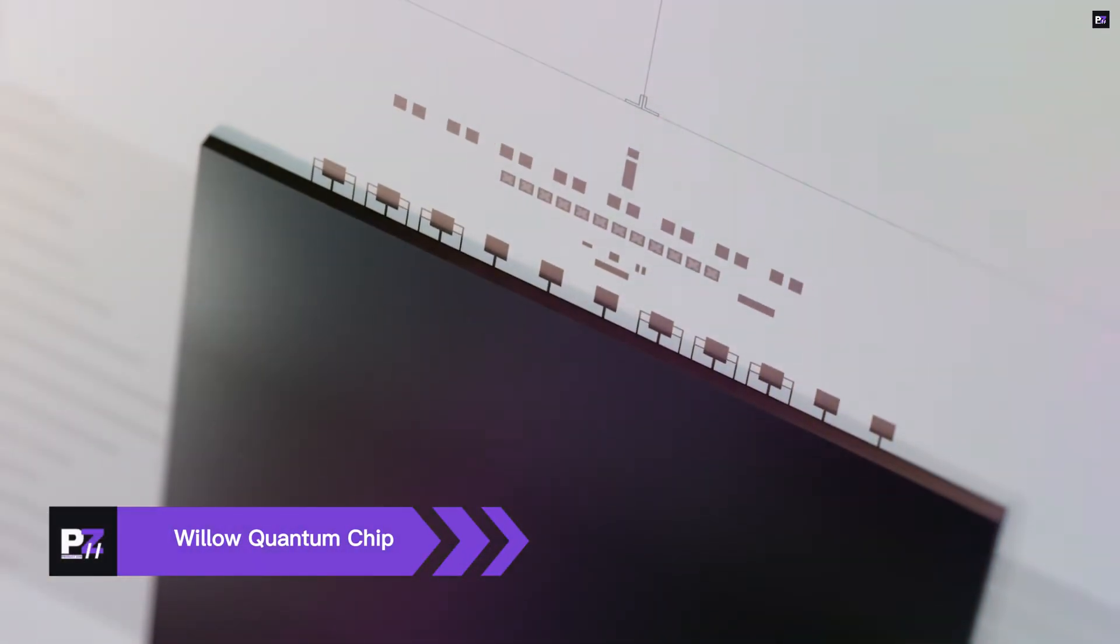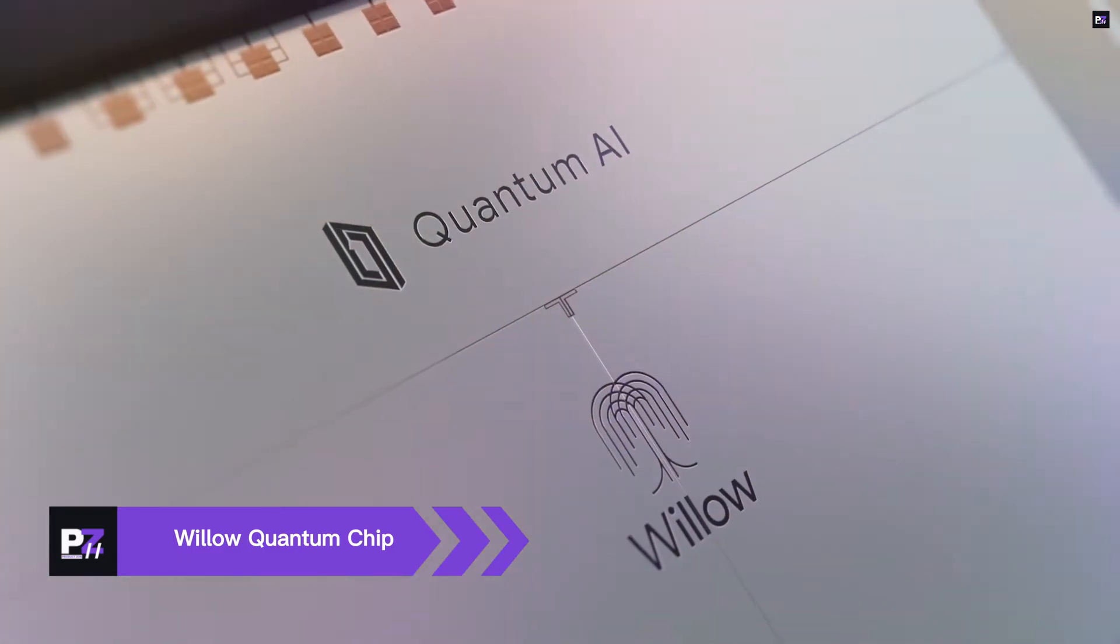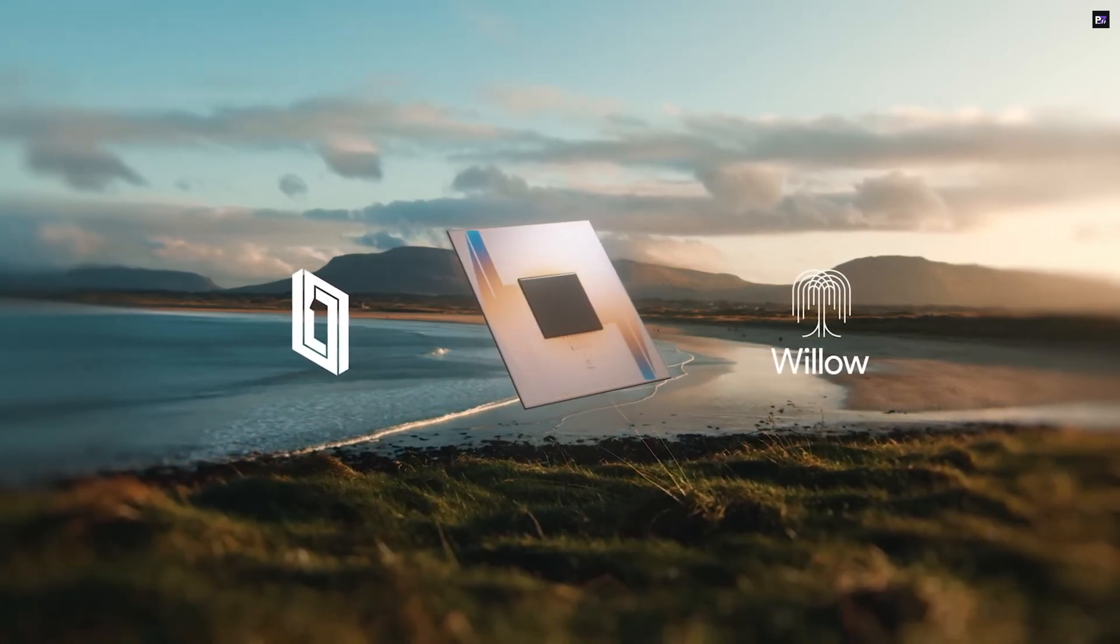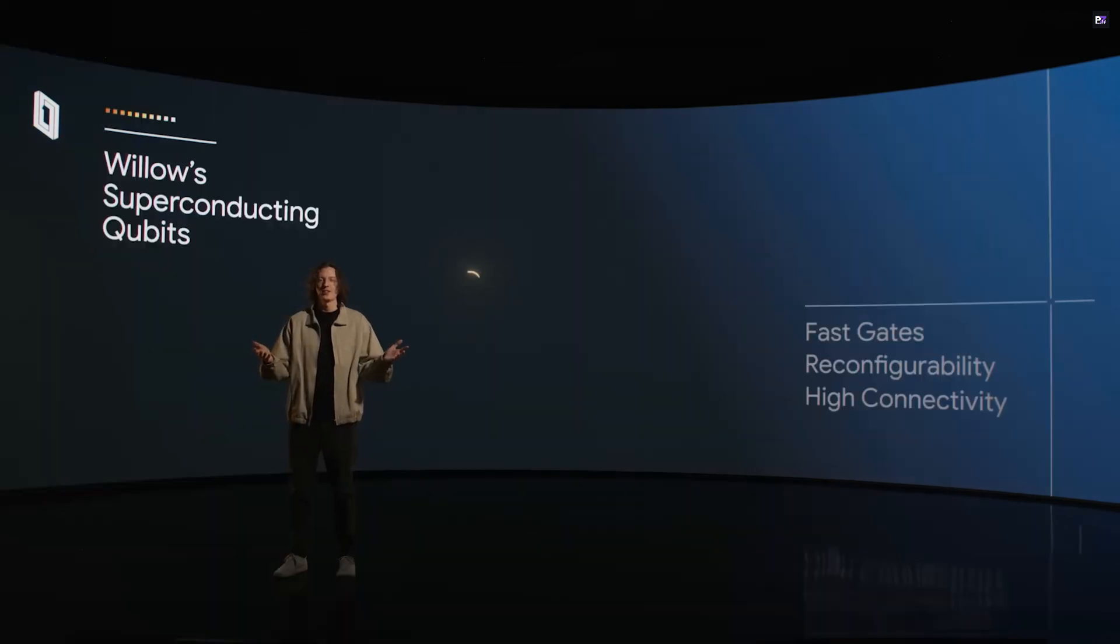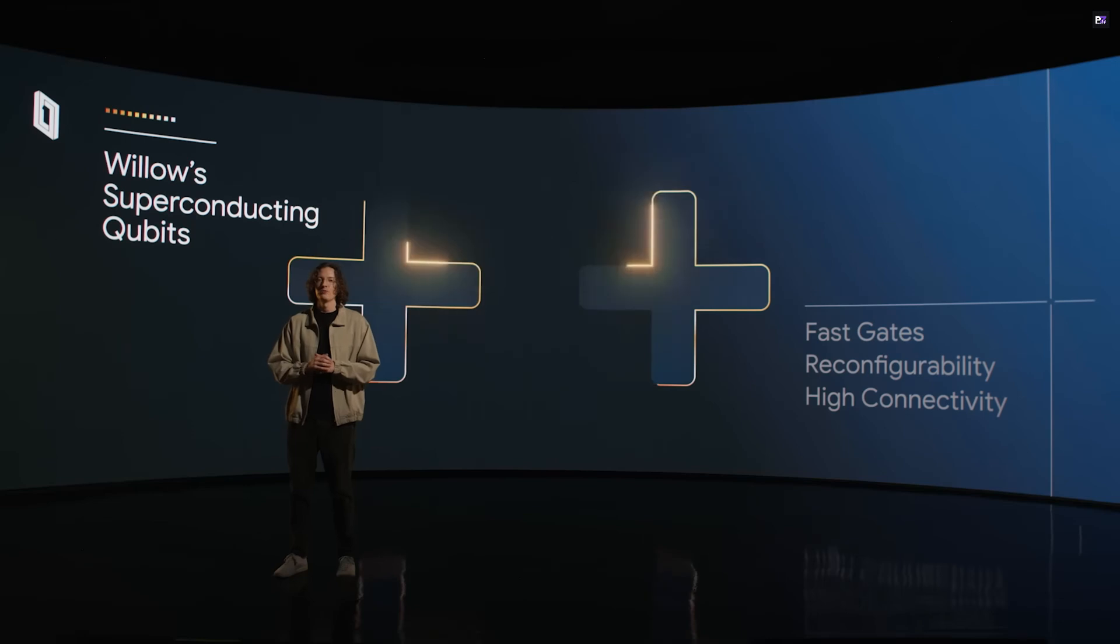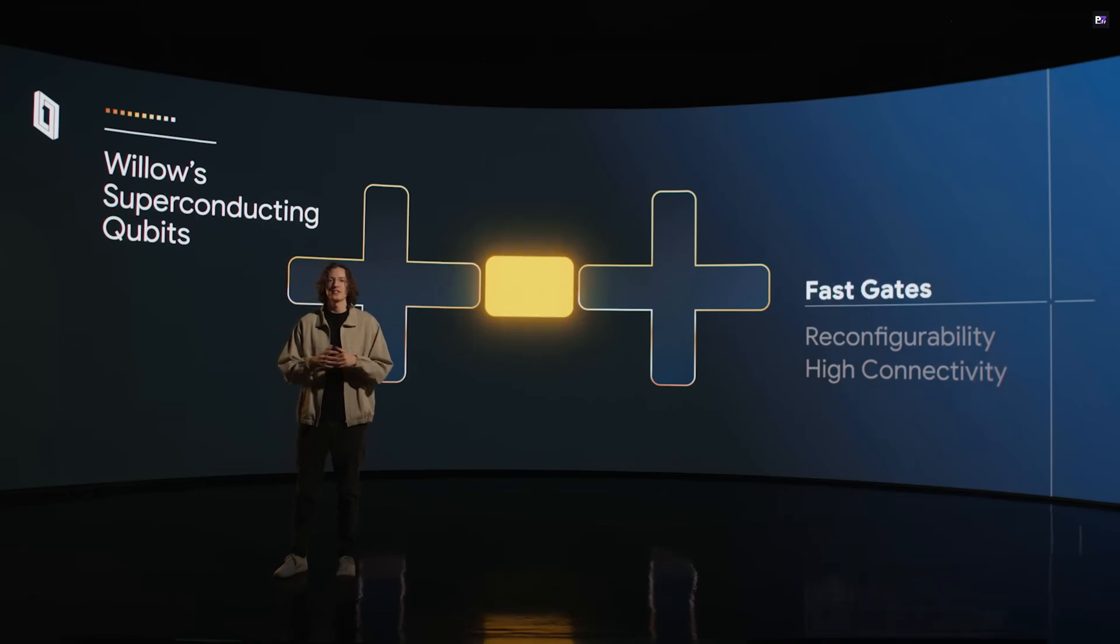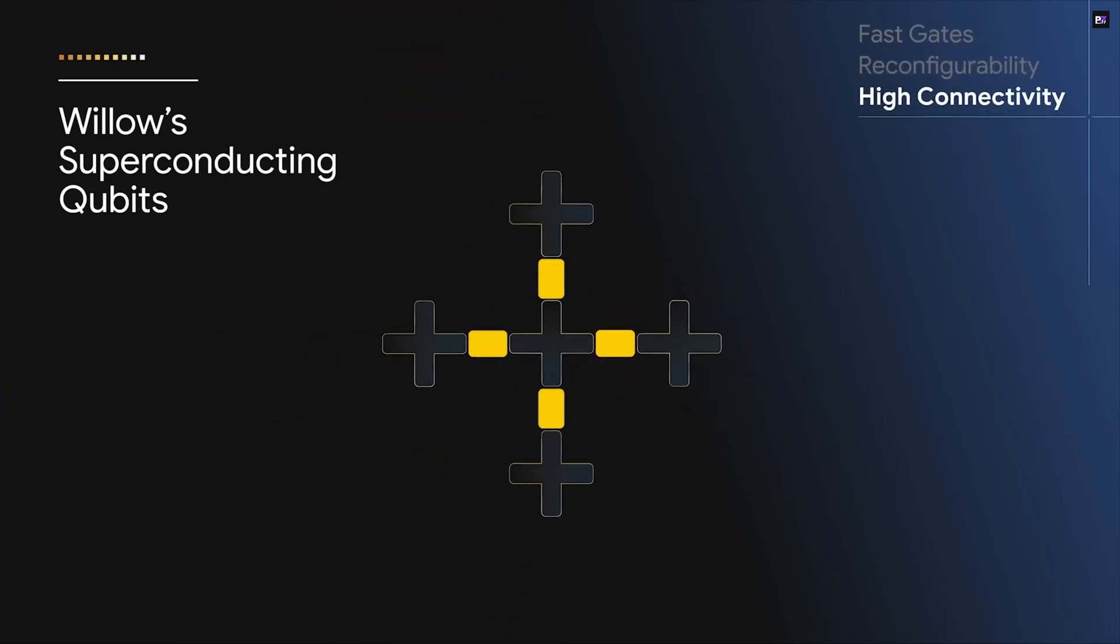Google's Willow Quantum Chip. Error-corrected quantum computing. Google has really pushed the boundaries with its new Willow Quantum Chip, featuring 105 superconducting qubits. The most exciting part? It introduces real-time error correction, which is a massive step forward in making quantum computing truly usable. We're talking about a level of computational power where benchmark tests showed Willow solving complex tasks in just 5 minutes that would otherwise take even the most powerful supercomputers a mind-boggling 10 septillion years to complete.